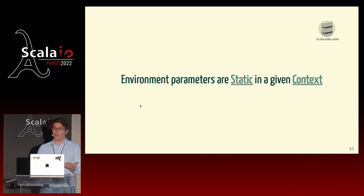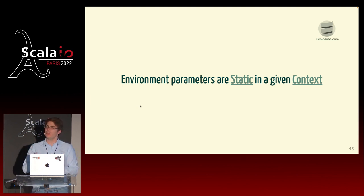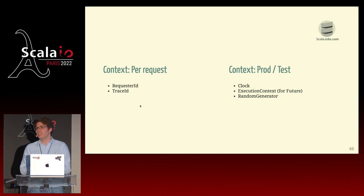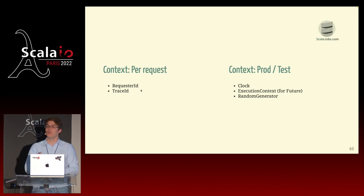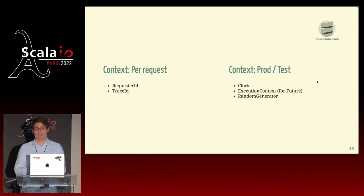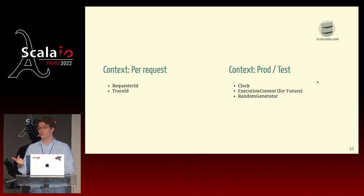To review the environment parameters: they are static in a given context — they only change when you change the context. The two contexts that make the most sense are the per-request one (for each HTTP or Kafka request, you have a requester ID or a trace ID for open tracing) and production versus test code (where you might have a clock, an execution context, or random generators). These are just examples.